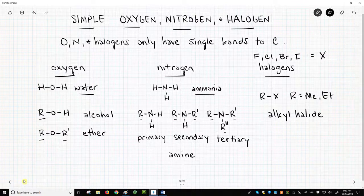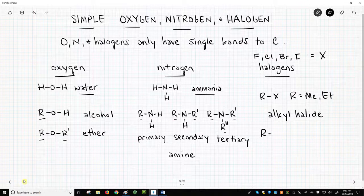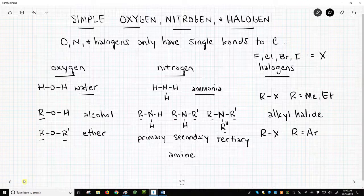If the R group is an aromatic ring, sometimes labeled as AR, it is called an aryl halide.